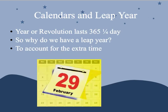Stemming from revolution, we have our year. It takes us 365 and one quarter days to revolve around the sun, which leads us to leap year. We have a leap year every four years to account for the extra time — one quarter plus one quarter plus one quarter plus one quarter equals one whole extra day, so it's added in every fourth year.